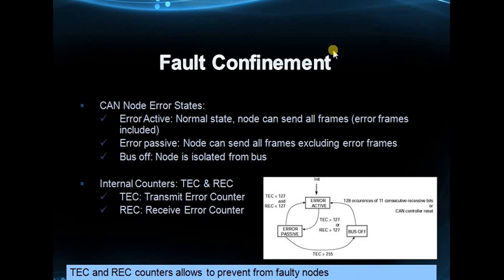This fault confinement is a very excellent feature in CAN. There are 3 states for every node: Error Active, Error Passive, and Bus Off. Each node has a TEC (Transmit Error Count) and REC (Receive Error Count). Whenever there is a successful transmission, the TEC decrements. Whenever there is a successful reception, the REC decrements.